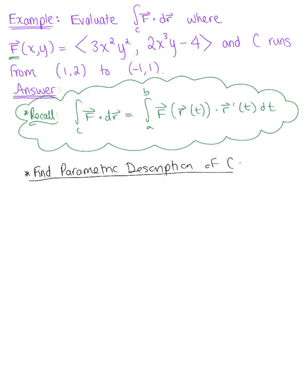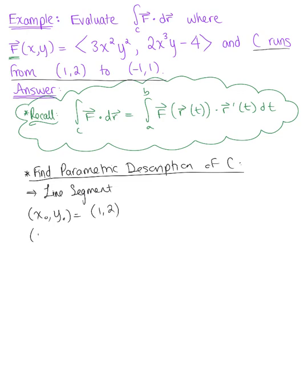We want to find a parametric description of our curve C. We are given that C runs from the point 1, 2 to the point negative 1, 1. So we have a line segment, and we are given the endpoints of this line segment. Let's define these points: I'm going to let (x₀, y₀) be the first point, 1, 2, and I'll let (x₁, y₁) be negative 1, 1.